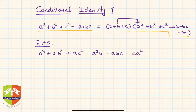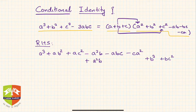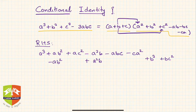Next, multiplying b with all terms in the second bracket, I'll keep like terms together: a²b, then b³ separately, then bc² separately, then -ab², then -b²c, and -abc.